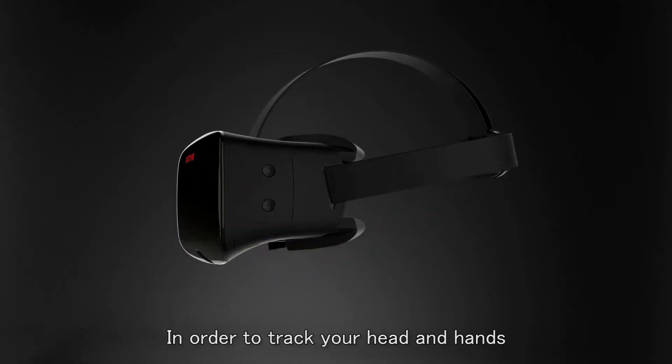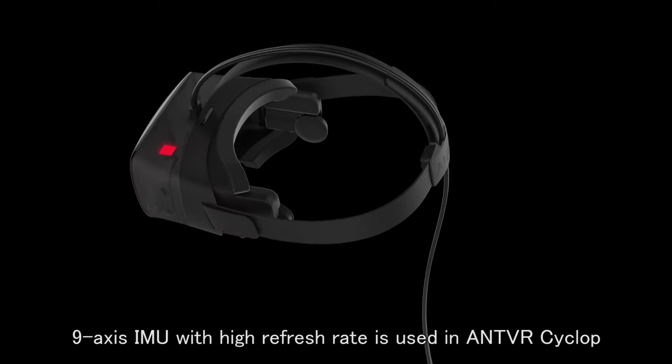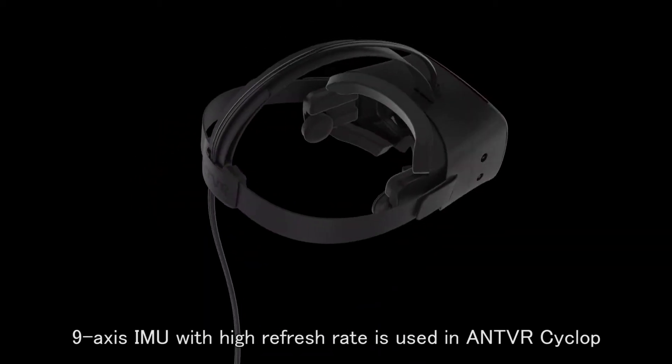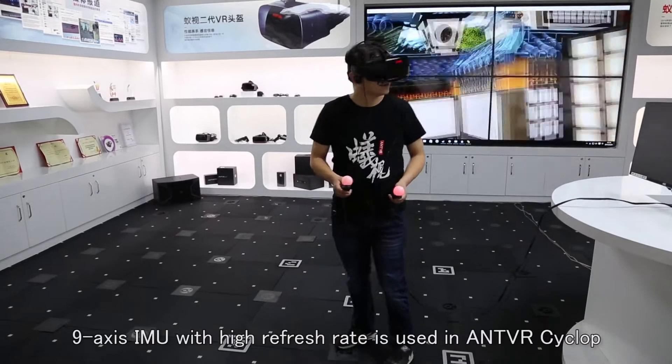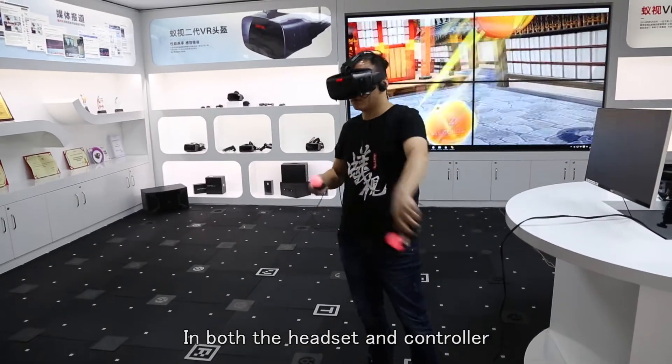In order to track your head and hands, 9-axis IMU with high refresh rate is used in AntVR Cyclops, in both the headset and the controller.